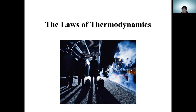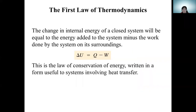The second law of thermodynamics. As you know, in the last lecture we studied the first law of thermodynamics — the change in internal energy equals the difference between heat and work: delta U equals Q minus W, where U is internal energy, Q is heat, and W is work done by the system.